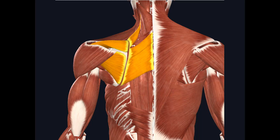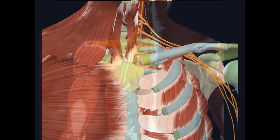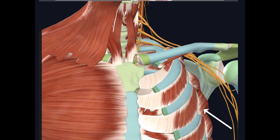Here we can see the supraspinatus and infraspinatus muscles, supplied by the suprascapular nerve from the upper trunk of the brachial plexus. The small subclavius muscle is supplied by the nerve to subclavius from the upper trunk. We can also see the long thoracic nerve, which runs along the side wall of the chest to supply the serratus anterior muscle.